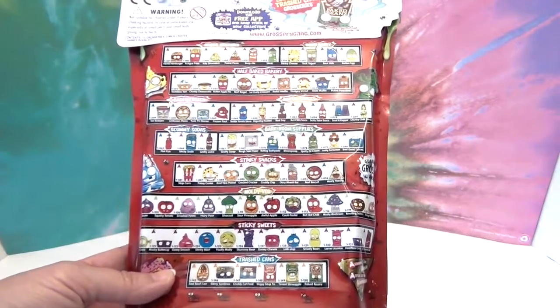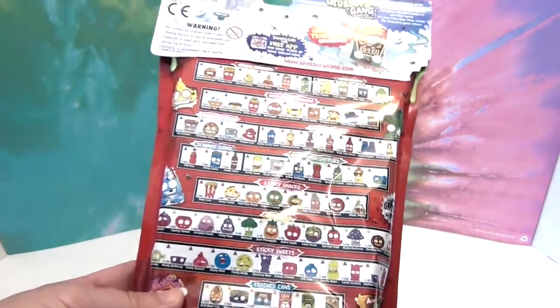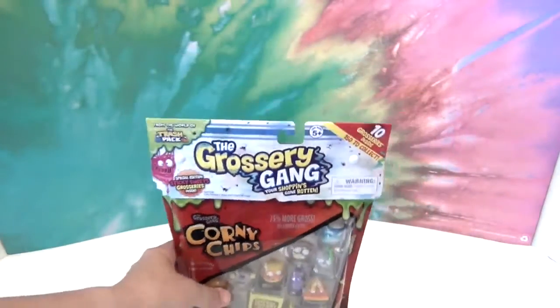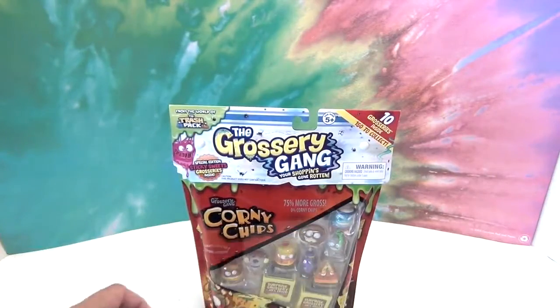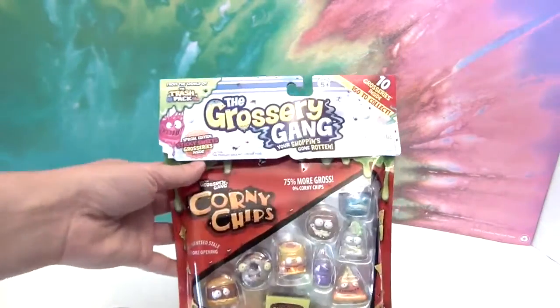It shows us on the back the sticky sweets as well as on the checklist. And we also have a crusty chocolate bar. So let's go ahead and open the Grocery Gang.